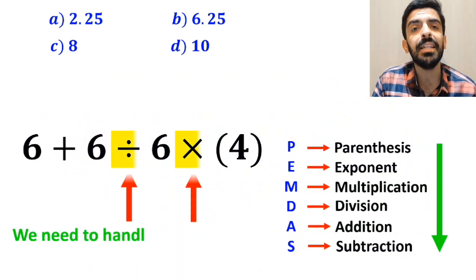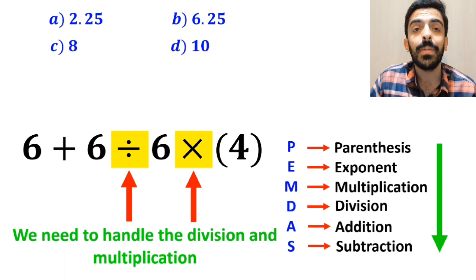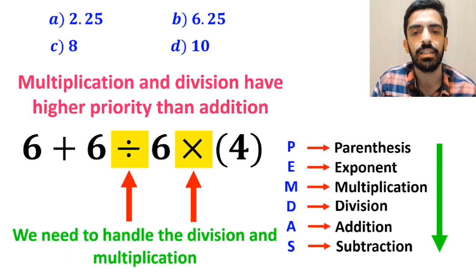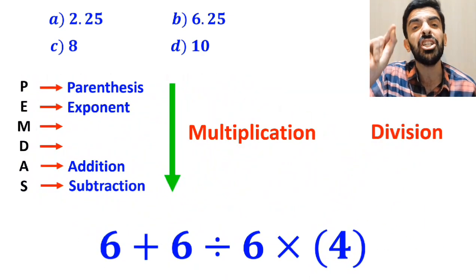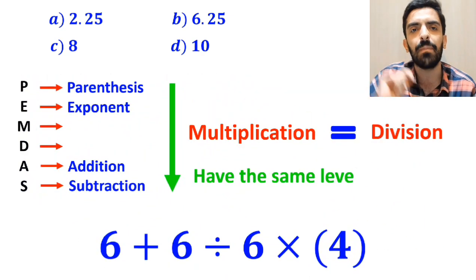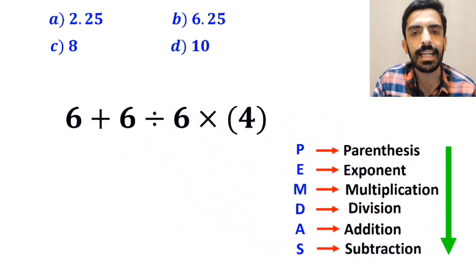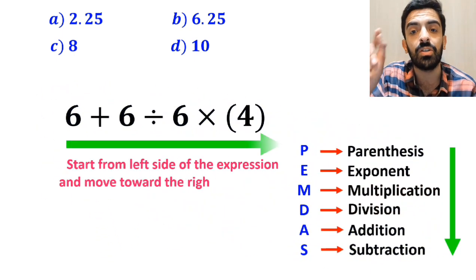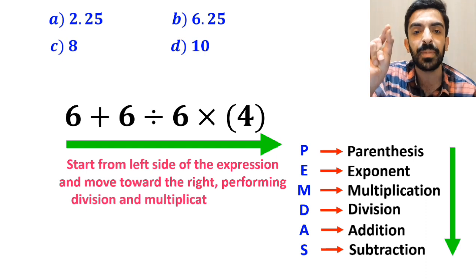In the next step, we need to handle the division and multiplication, because multiplication and division have a higher priority than addition. However, it's very important to note that in the PEMDAS rule, multiplication and division have the same level of priority. In this case, the best thing to do is to start from the left side of the expression and move toward the right, performing division and multiplication in order.